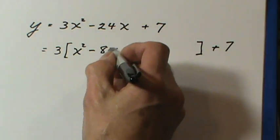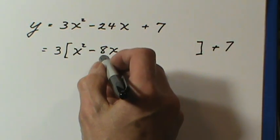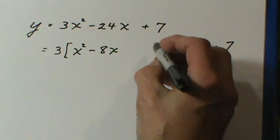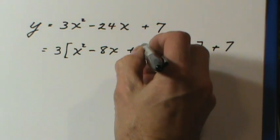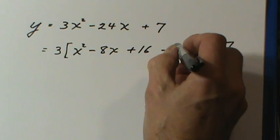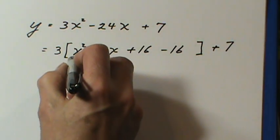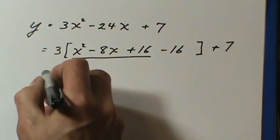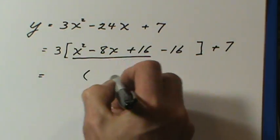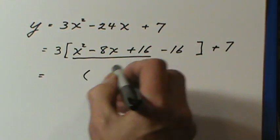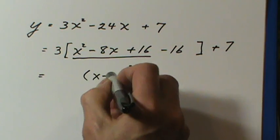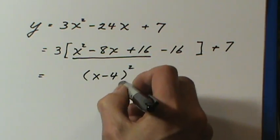Just like in the last question, half of negative eight is negative four. When you square that, you get sixteen. Add the sixteen and subtract the sixteen. Once again, the first three terms are a perfect square, and we can write x minus four in brackets squared.